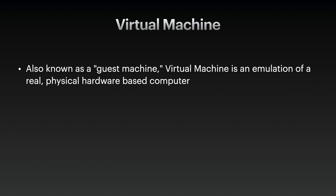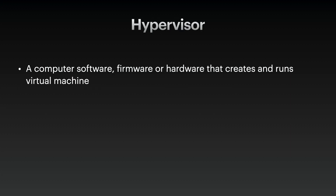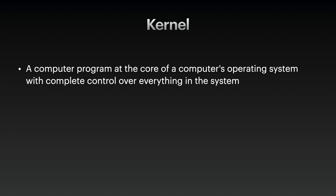Next, we have a virtual machine. Also known as a guest machine, a virtual machine is an emulation of a real, physical hardware-based computer. Then we have host — the computer on which a hypervisor runs one or more virtual machines. Then we have a hypervisor — computer software, firmware, or hardware that creates and runs virtual machines. Lastly, we have a kernel — a computer program at the core of the computer's operating system with complete control over everything in the system.